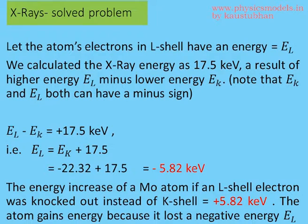The x-rays are generated when an electron jumps from the L-shell into the K-shell. If E_L is the energy in the L-shell and E_K is the energy in the K-shell, then E_L - E_K equals the energy released as x-rays. So E_L - E_K = +17.5 keV, which means E_L = E_K + 17.5. Substituting -22.32 + 17.5, we get E_L = -5.82 keV.